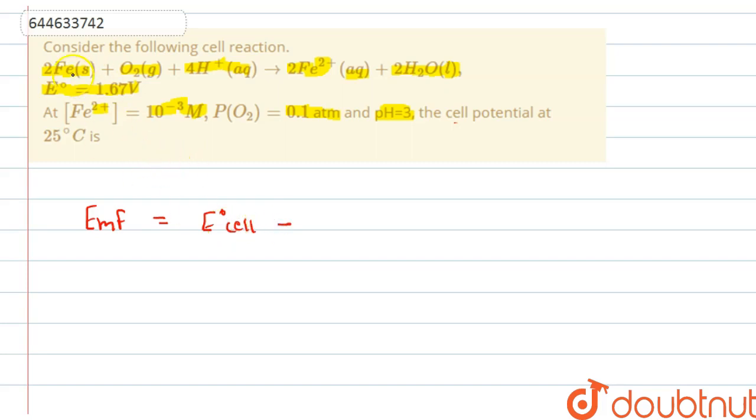So first of all, let's write down this equation at first. 2Fe solid plus O2 gas plus 4H+ aqueous gives us 2Fe2+ ions which is in aqueous plus 2 times H2O which is in liquid.